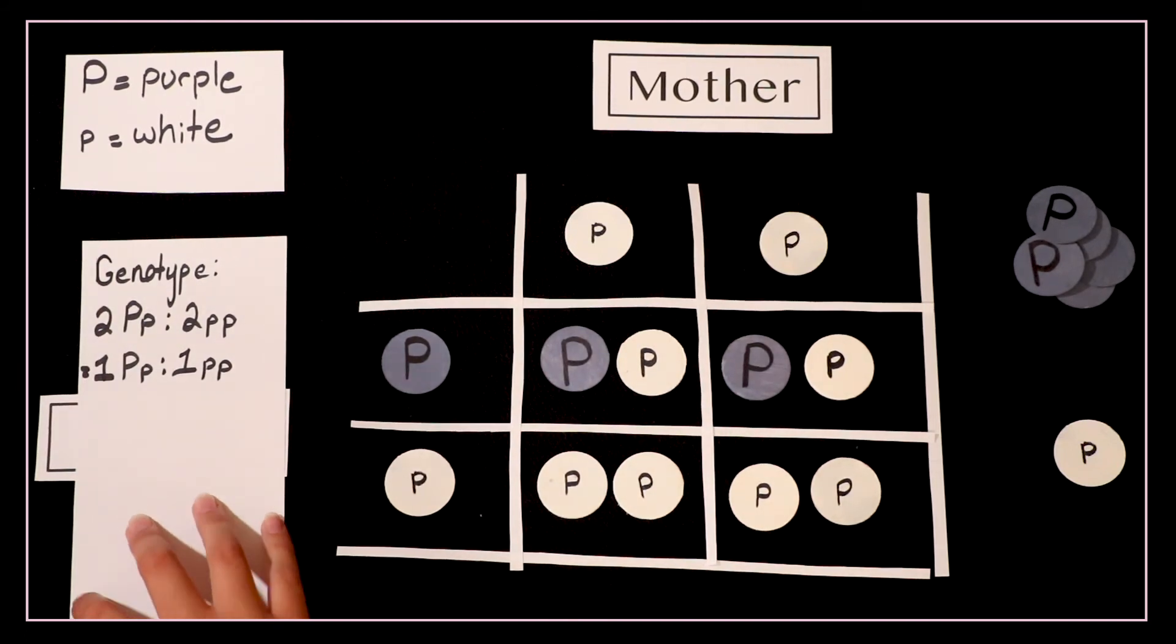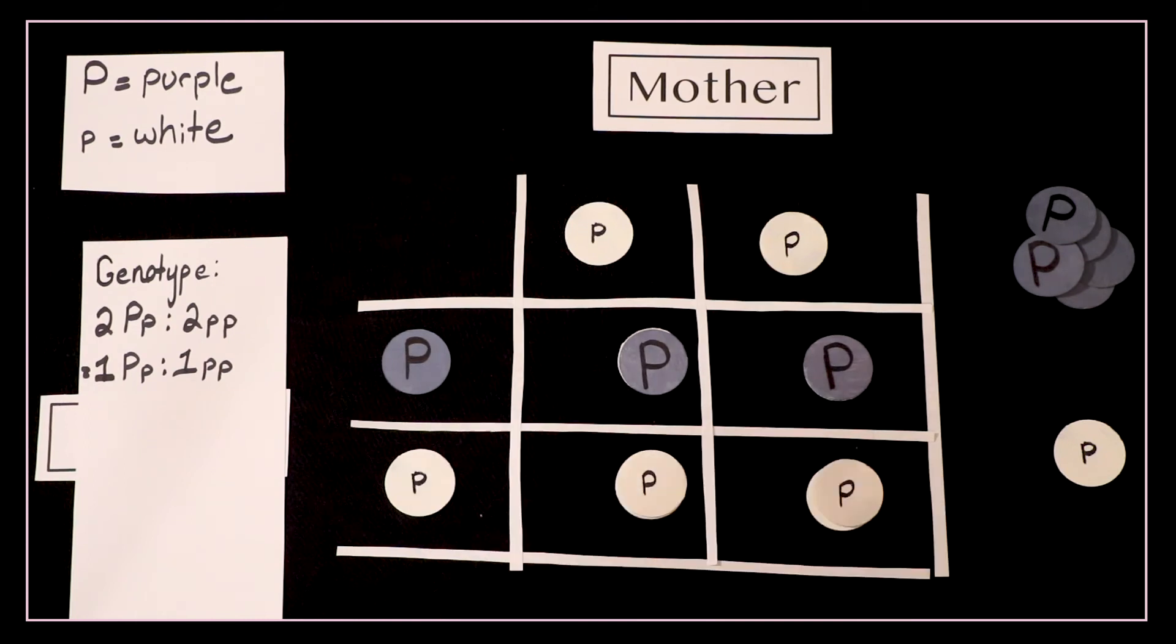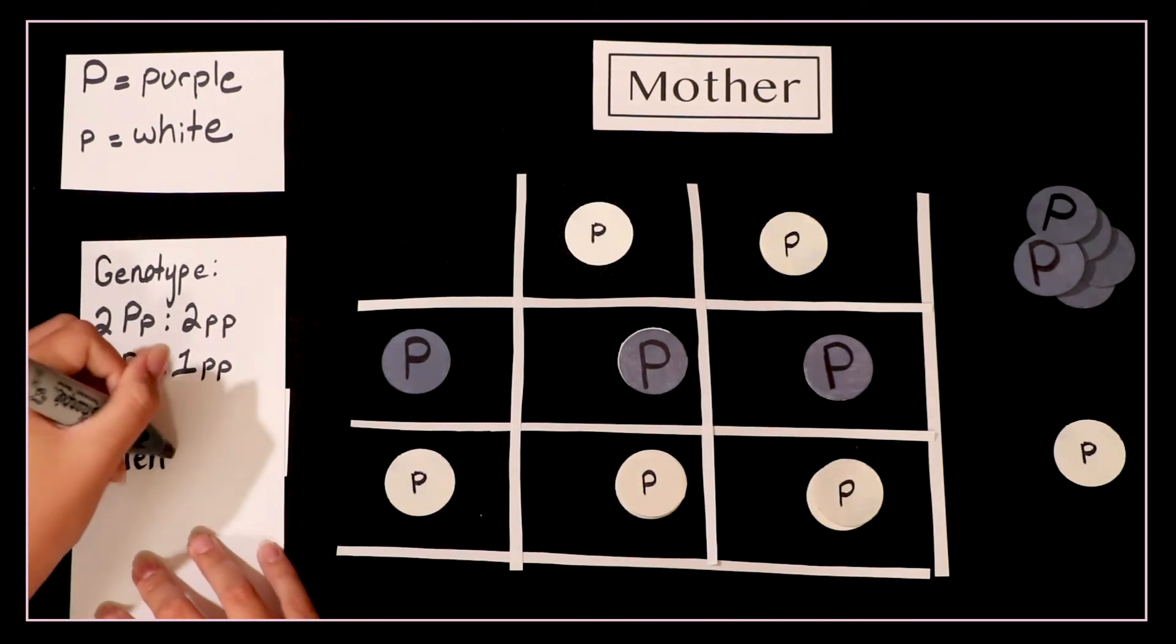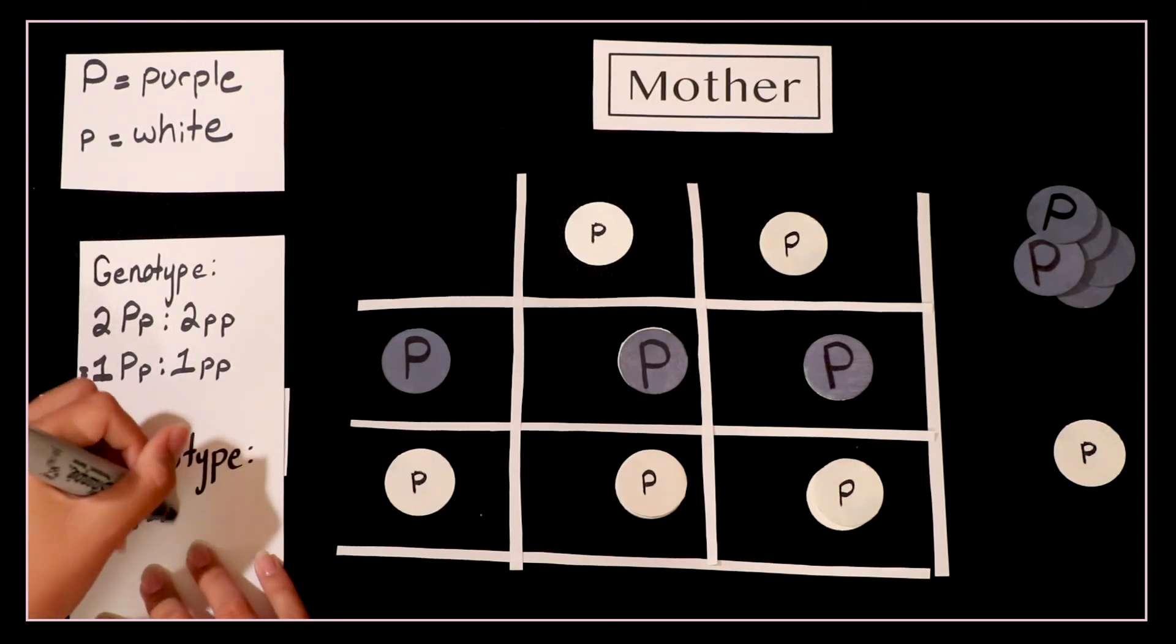Now we do the phenotype. Place the dominant dots over top and we get two purple and two white. Again reduce that down to one purple to one white.